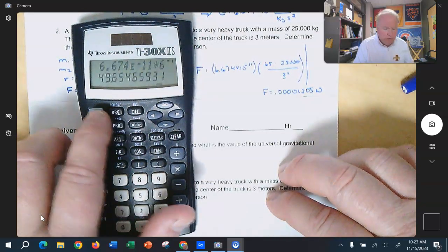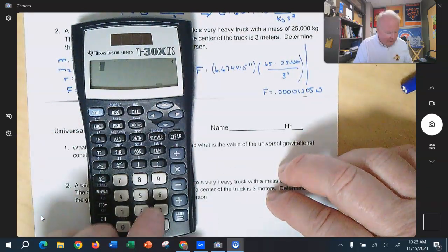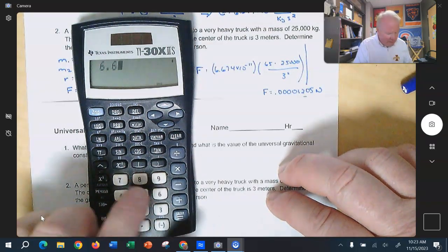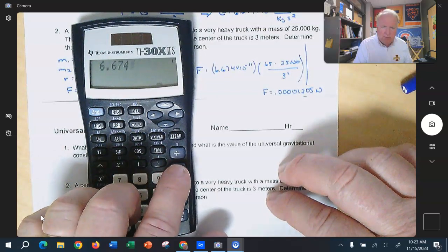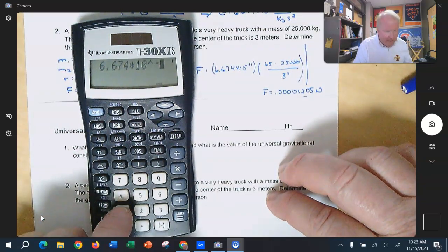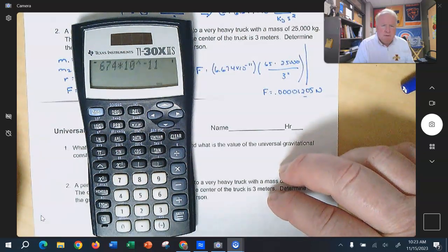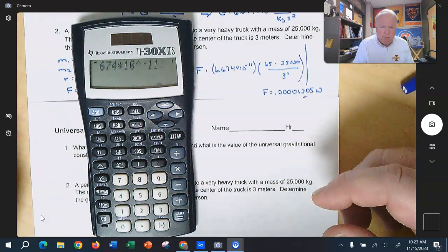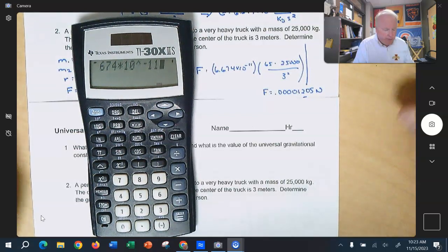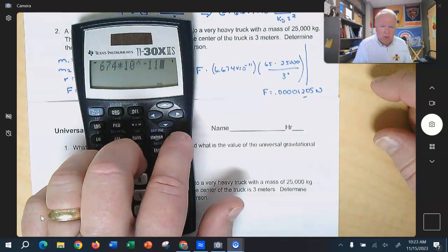All right, most students think that the right way to put 6.674 times 10 to the negative 11, they go 6.674, and then they put the times 10 raised to the negative 11. Now, this is okay, because it's correct, but it's going to get you the problem wrong a majority of the time. And so we're going to learn a different way to put that into our calculator.